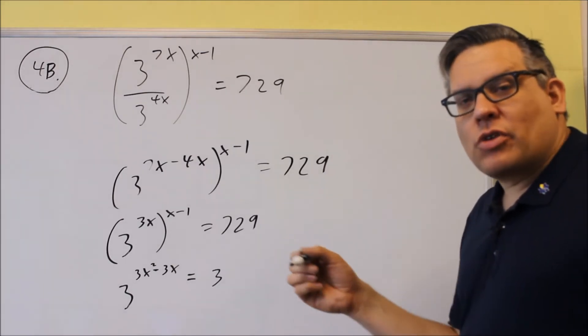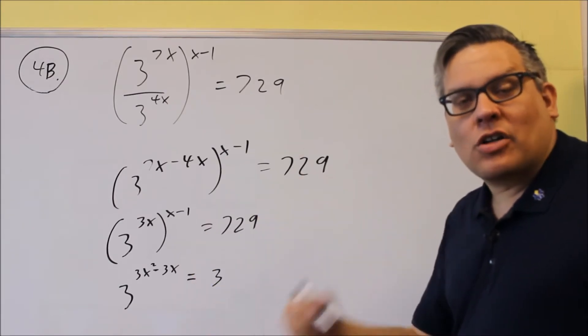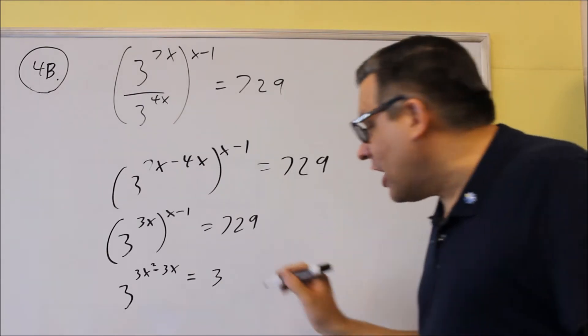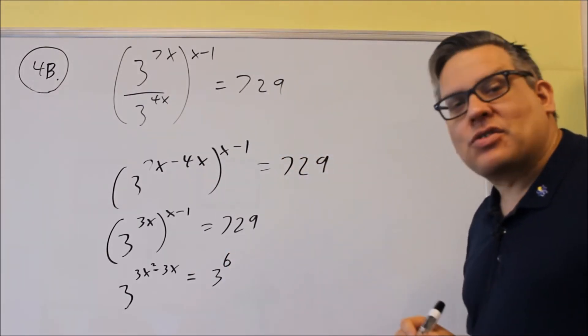3 squared, 3 times 3 is 9, times 3 is 27, times another 3 is 81. So if you keep multiplying by 3 until you get to 729, you'll find out that you have to multiply 3 six times.